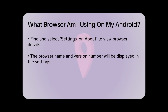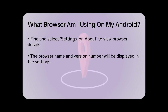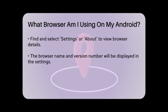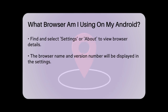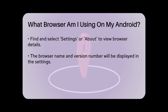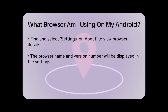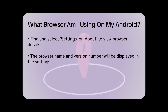Another way to check is by looking at the app's icon on your home screen or in the app drawer. Each browser has a distinct icon. Chrome has a colorful circle, Firefox has a fox wrapped around a globe, and the default browser usually has a simple icon that might look like a globe or a compass.